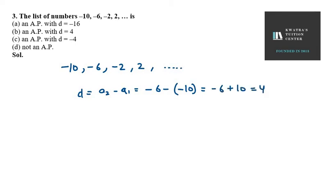So now let's check for A₃ minus A₂. A₃ is -2 and A₂ is -6. So it will be -2 plus 6 equal 4 again.